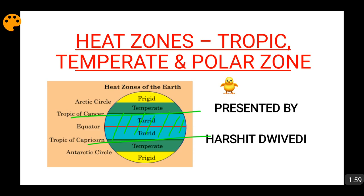In summers in the northern hemisphere, the sun goes up to the tropic of cancer, and during the winters, it goes up to the tropic of Capricorn. So the apparent movement of the sun is between the tropic of cancer and the tropic of Capricorn. This area between the two tropics receives direct rays of the sun for the complete year, so obviously it is going to be warm.